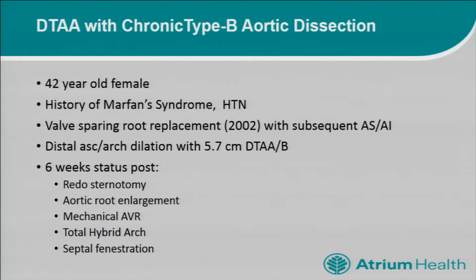This is a case of a 42-year-old female with Marfan syndrome and longstanding hypertension. She underwent a valve-sparing root replacement in 2002, done with a 26-straight graft. She was about 6'3", probably not quite a big enough graft, and that left her with moderate AS and severe AI. She then had distal ascending and arch dilation, with the most concerning pathology being a 5.7-centimeter proximal descending thoracic aortic aneurysm in the setting of a chronic type B dissection.